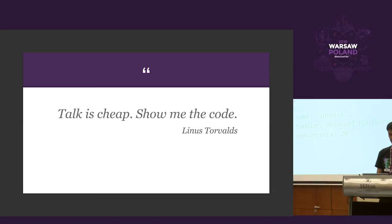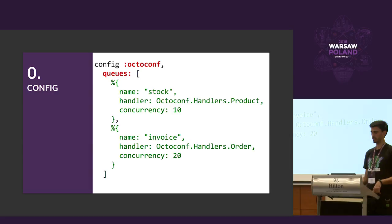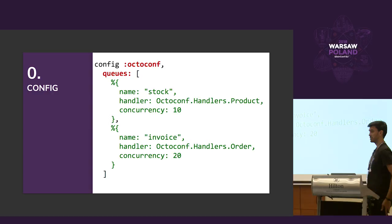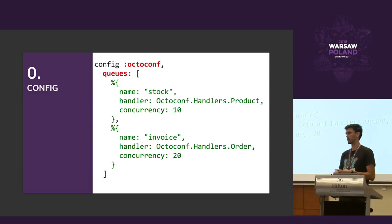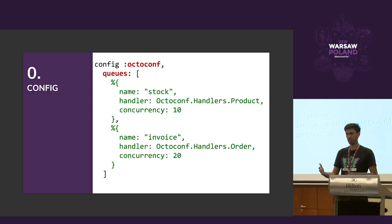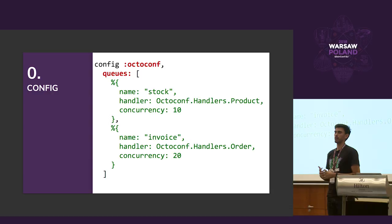This talk has a lot of code, and I tried to be very practical, because we've done this in production — almost the same way. At stage zero we have the configuration. This needs to be simple so our team can get into this project. If they need to consume another queue, they just add another configuration entry: the name of the queue, the handler that will process the message, and the concurrency — which is exactly the number of concurrent processes running at the same time in our node.